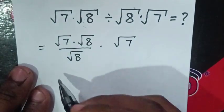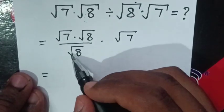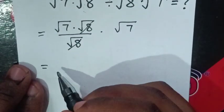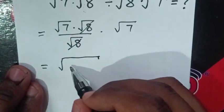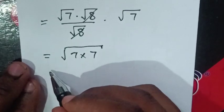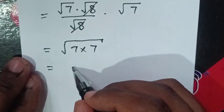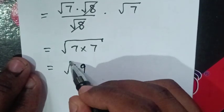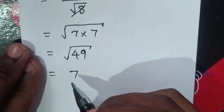So to simplify, this square root of 8 and square root of 8 will cancel. So it will be square root of 7 times 7, which will be equal to square root of 49, which is the same as 7.